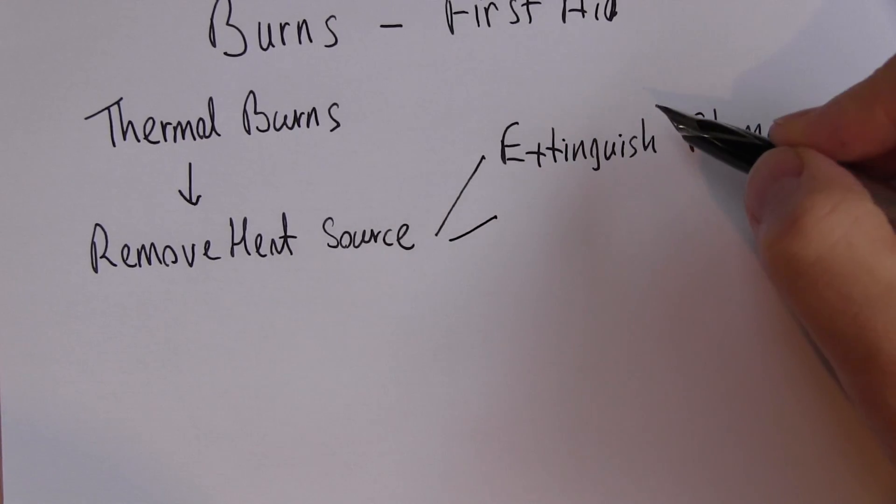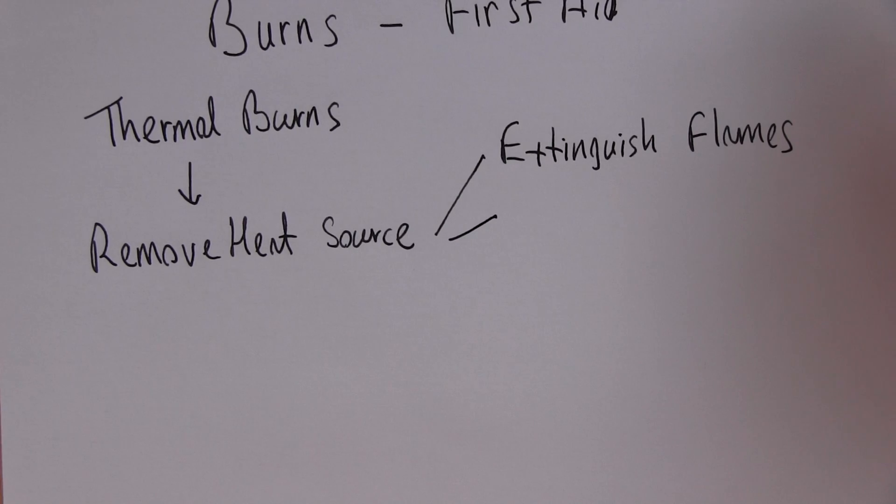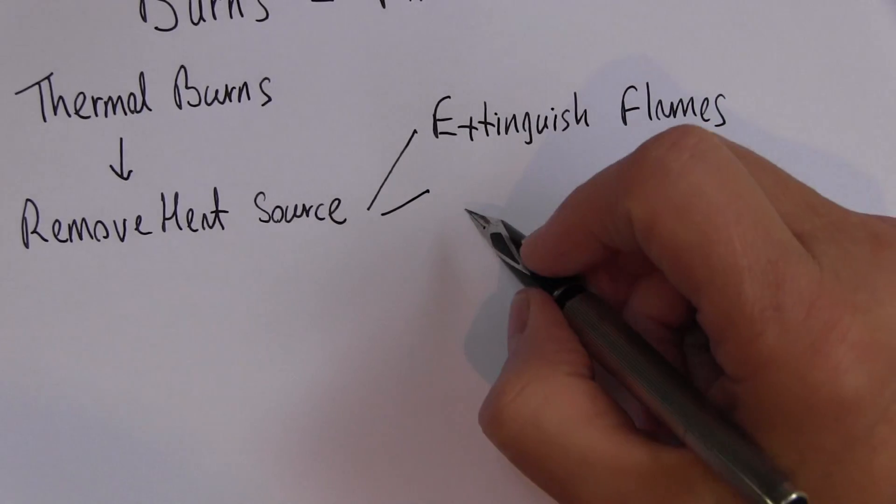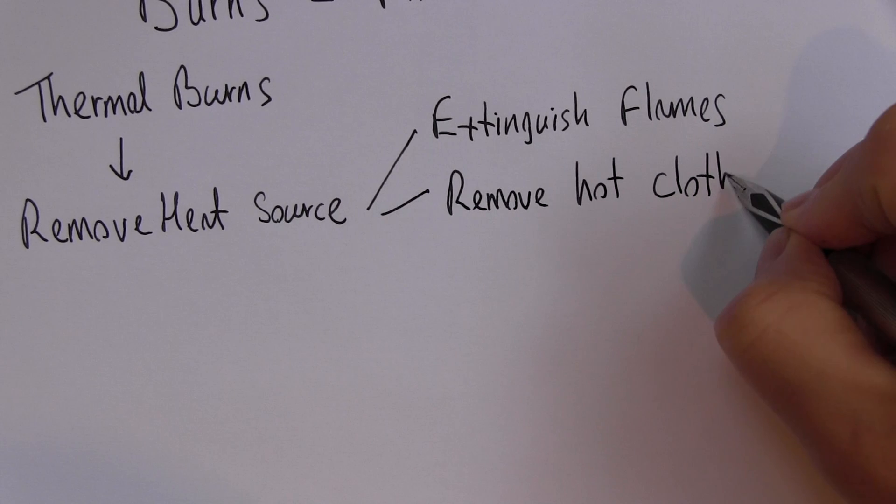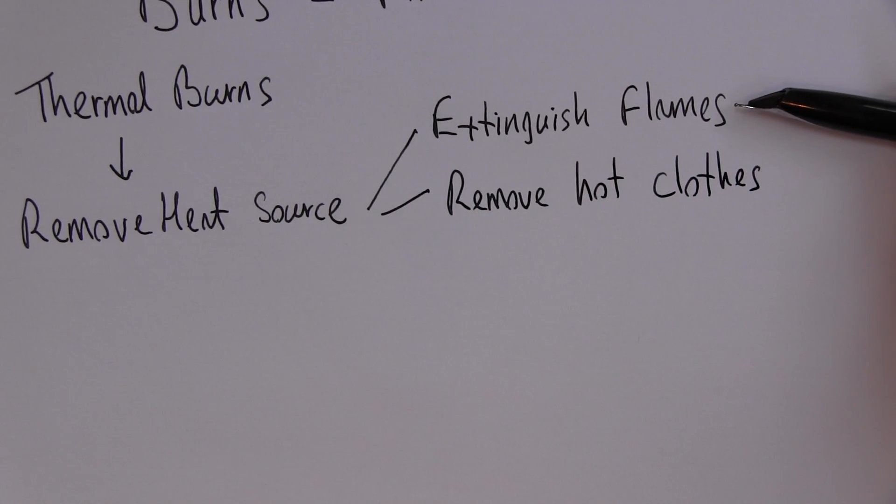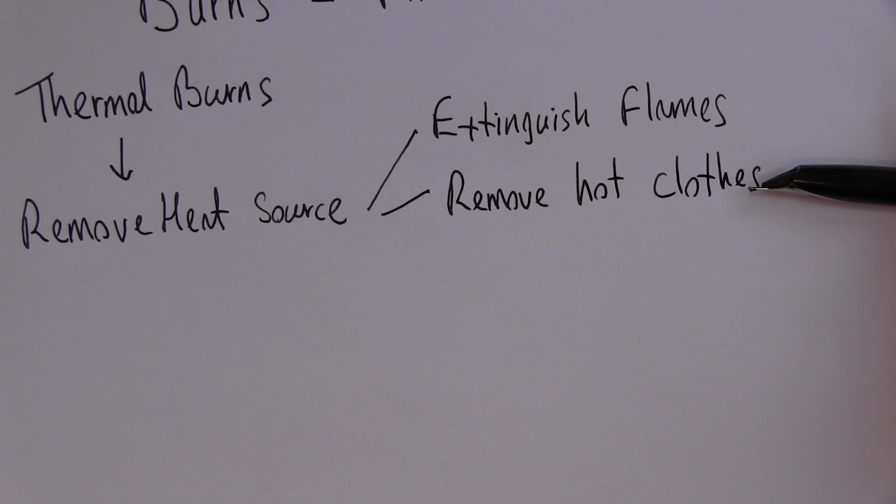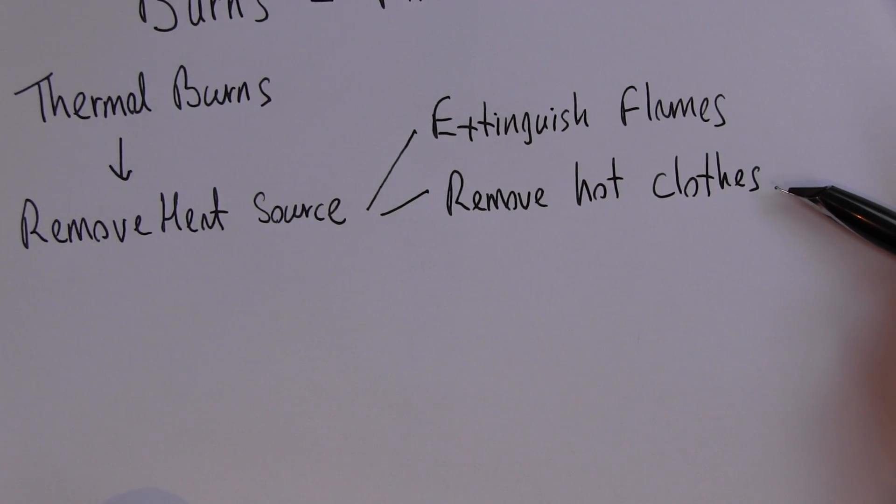But if someone has been exposed to a lot of heat, the clothes they're wearing will be very hot and will stay hot for some time. So remove hot clothes, because even if the flames are out, the clothes will remain hot for minutes and carry on burning. The only time we shouldn't remove clothes is if they're sticking to the skin. Especially some man-made materials can melt and adhere to the skin, and removing them would damage the skin. In that case, just cool them off with cool water.